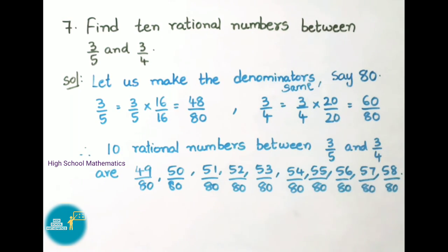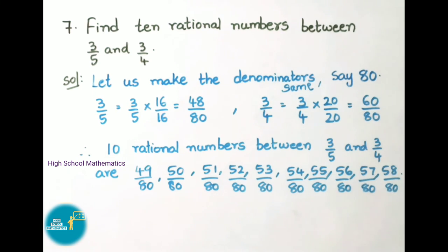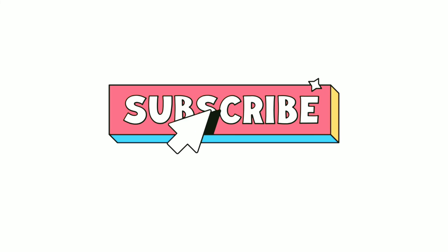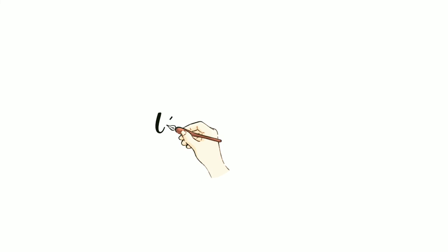Today we have seen Class 8, Chapter 1, Rational Numbers — Exercise 1.2, sums 5 to 7. By this we have completed our first chapter. Hope you all liked this video. If you liked this video, please like, share it with your friends, and subscribe to our channel. Thank you for watching.